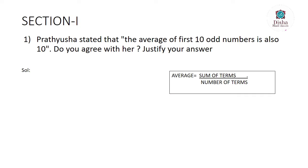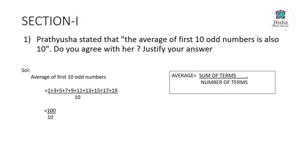The average of the first 10 odd numbers: the sum of the first 10 odd numbers equals 100, and the number of terms equals 10, which gives us 10. Since the average equals 10, she is right — we can agree with her. I think you got the same answer, so let's move on to the next question.